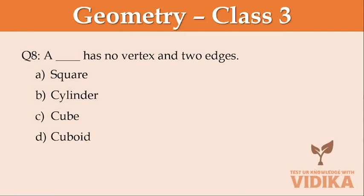A dash has no vertex and two edges. Option A square, option B cylinder, option C cube, option D cuboid.